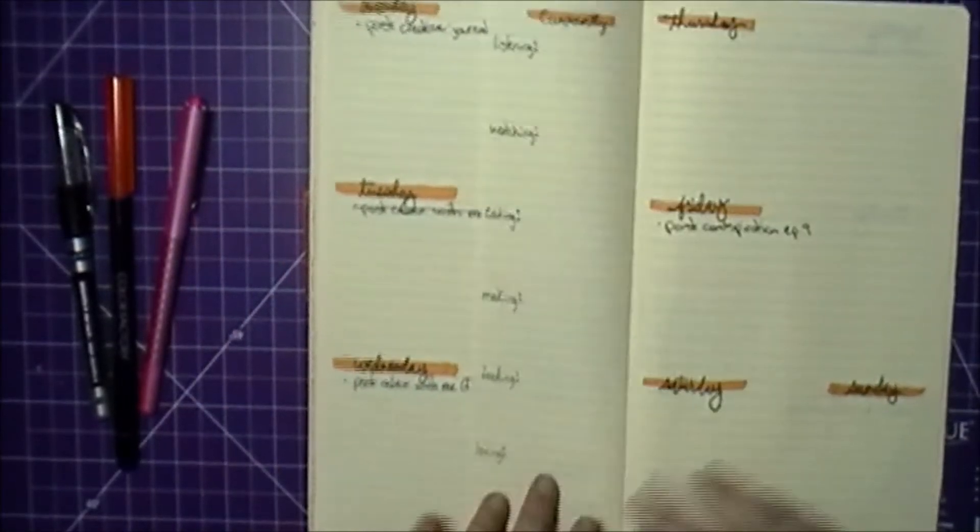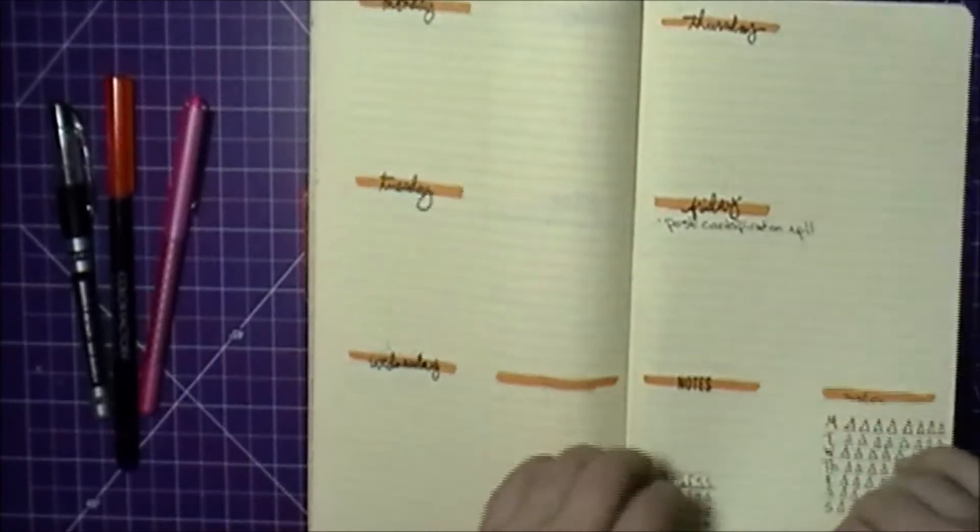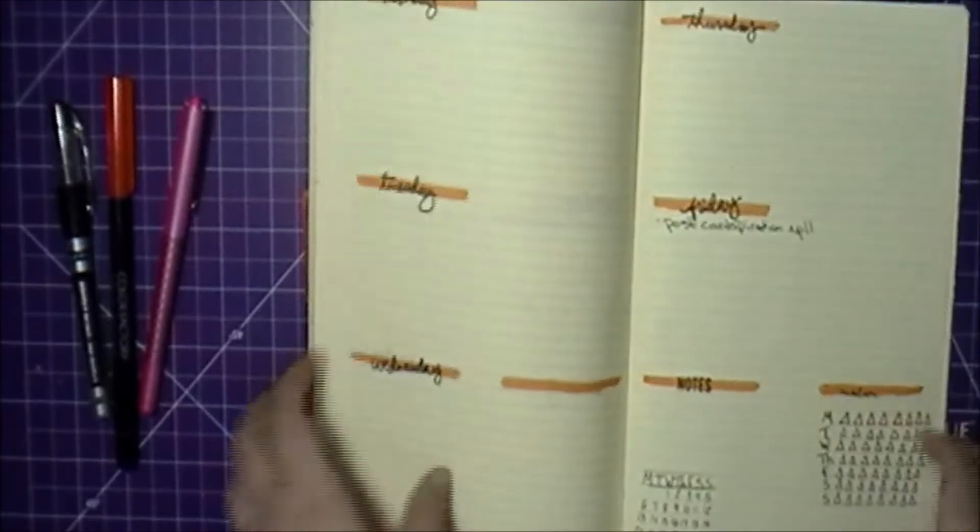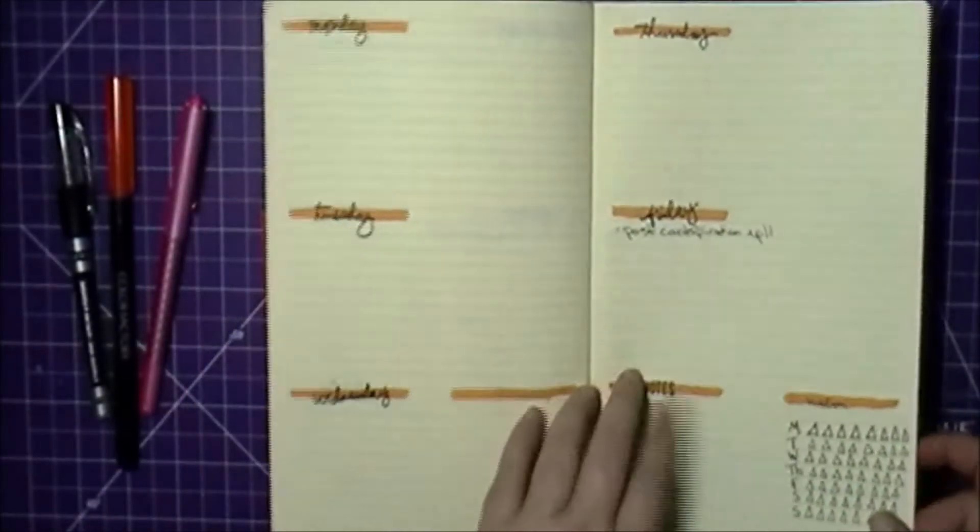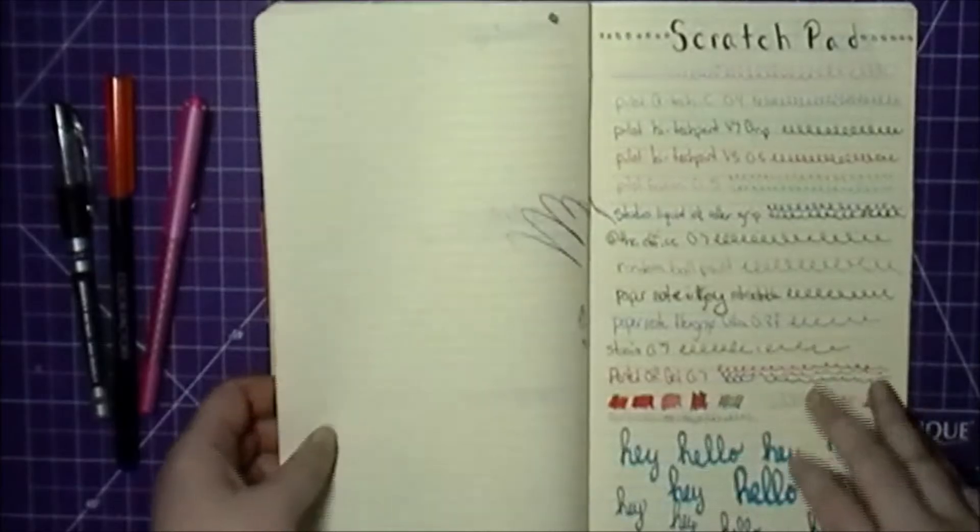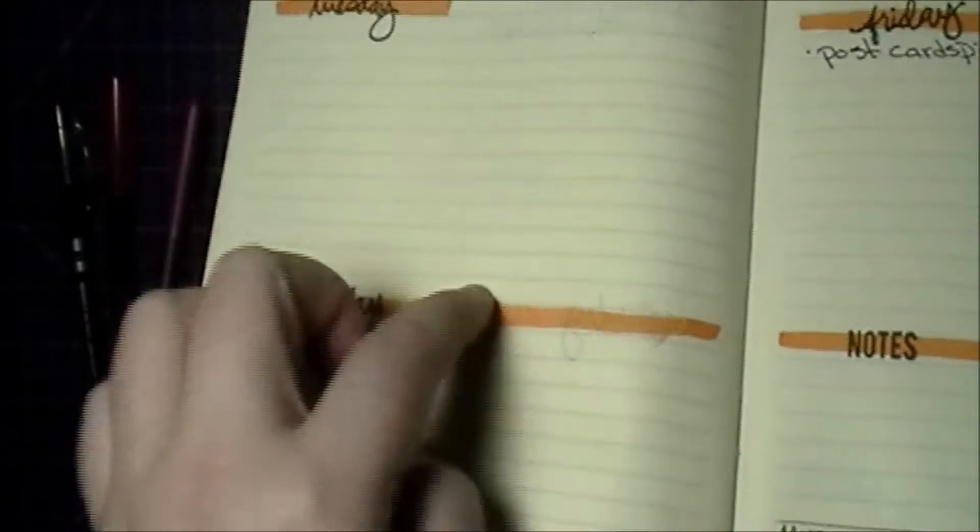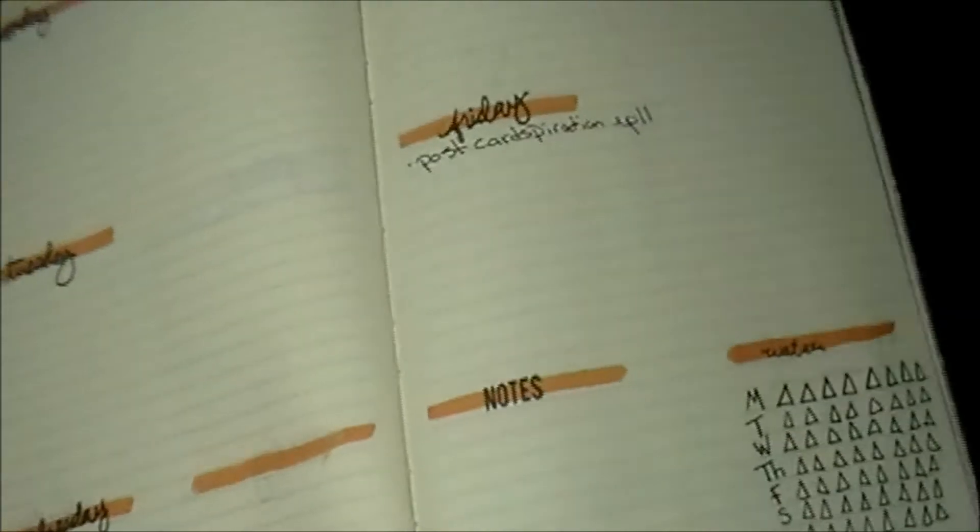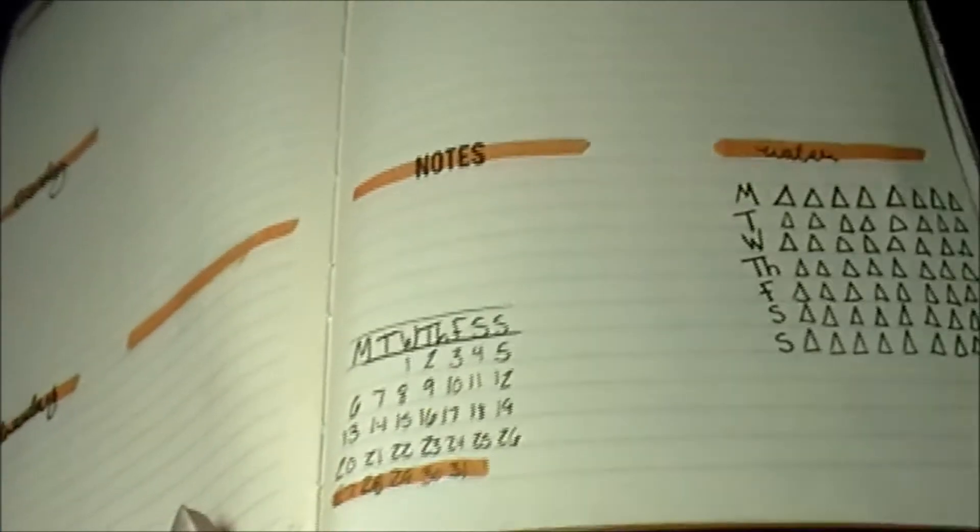That's the same for here. And then the last page, I didn't do a Dutch door because this was the only two pages I had left. And then I accidentally highlighted it right here when it's supposed to be over on this page for the notes and the water.